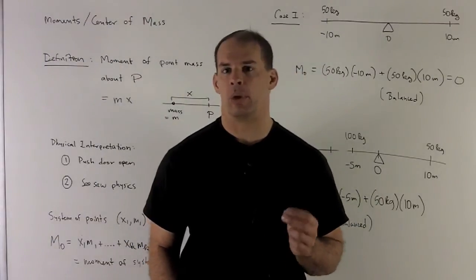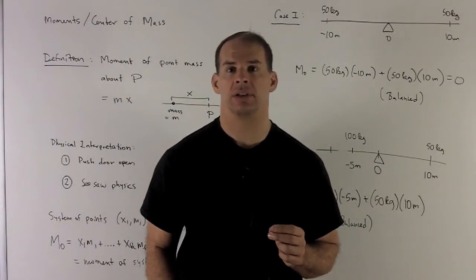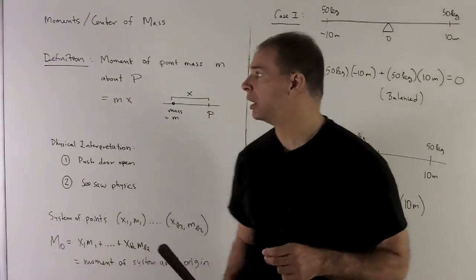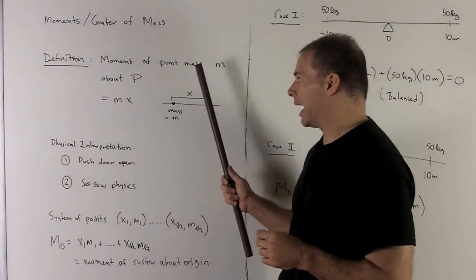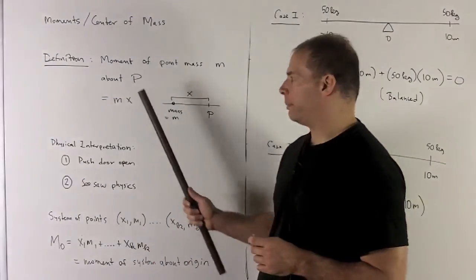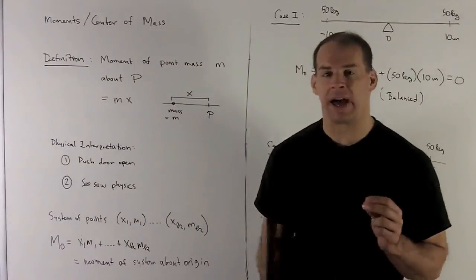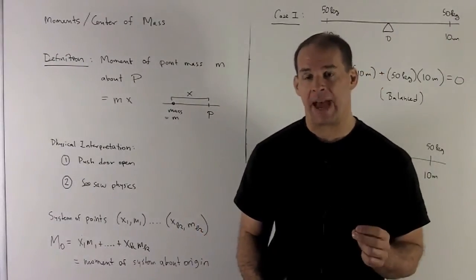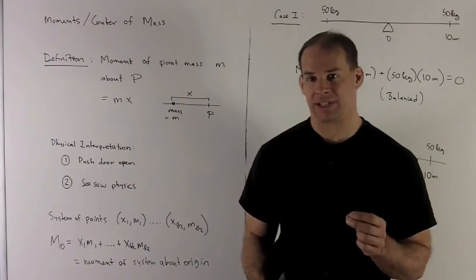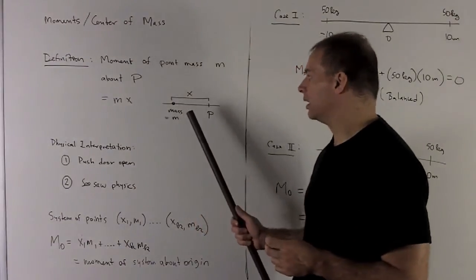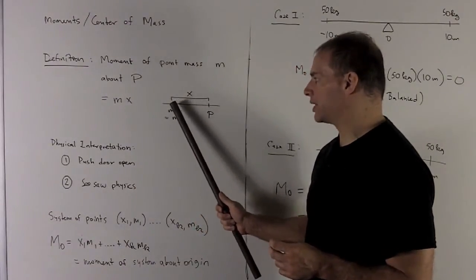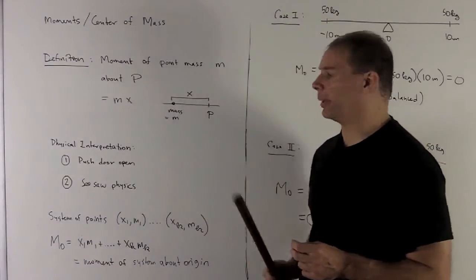Now let's take a look at moments and center of mass. Start with the definition. The moment of a point mass of mass M about the point P can be defined as the mass times the distance. So X is going to be distance from wherever our point mass is to the point P where we're measuring the moment.